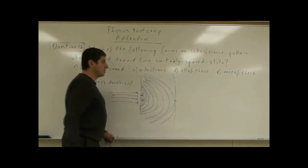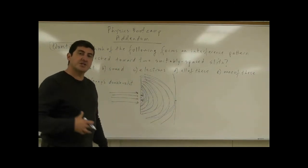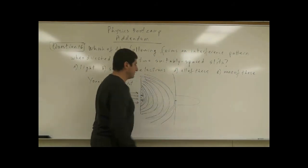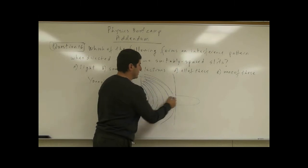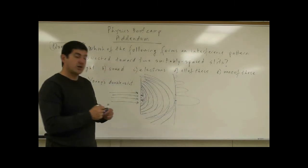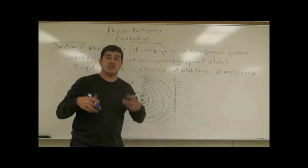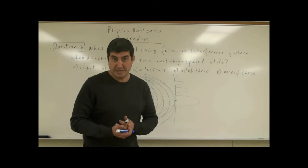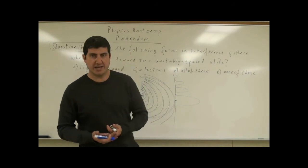You will see that at the center, two antinodes constructively interfere and you get the highest amplitude wave. Then you get destructive interference, then constructive, destructive, constructive, and so on. This leads to what's known as an interference pattern. This experiment establishes that light displays wave nature.